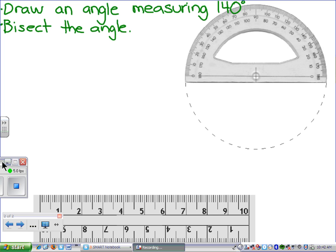Now, the first thing you need to do is think 140 degrees, what type of angle is that? Well, it's over 90 degrees, it's an obtuse angle.